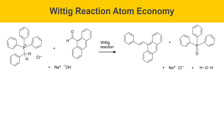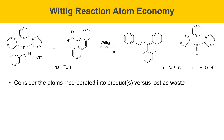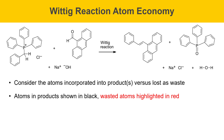This slide talks about the atom economy of the Wittig reaction. Atom economy is an important concept when considering the efficiency of a reaction and its ability to generate a product with minimal waste. Here I have the same reaction shown on previous slides, but instead of representing the phenyl groups simply as Ph, I've drawn out all of their structures so you can really see how big some of the groups really are. We're going to consider the atoms incorporated into products versus those lost as waste — product atoms shown in black, wasted atoms highlighted in red.